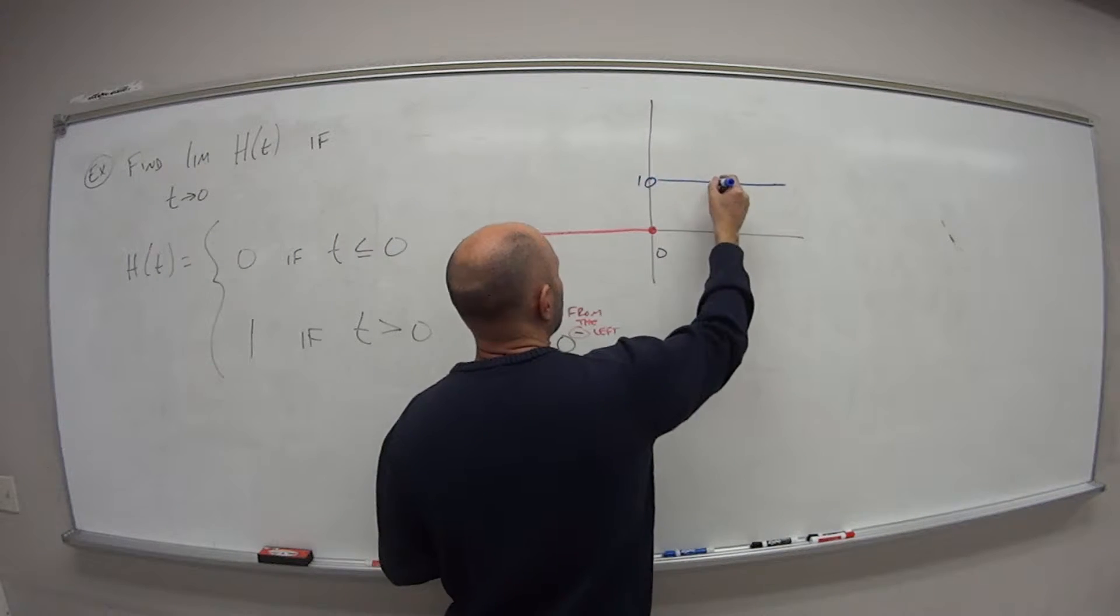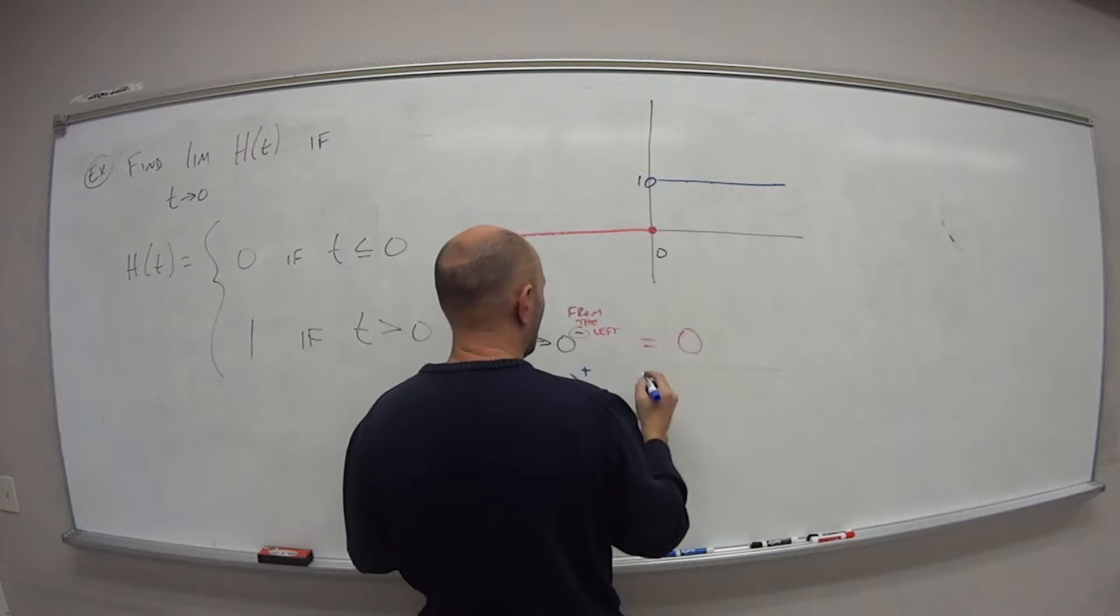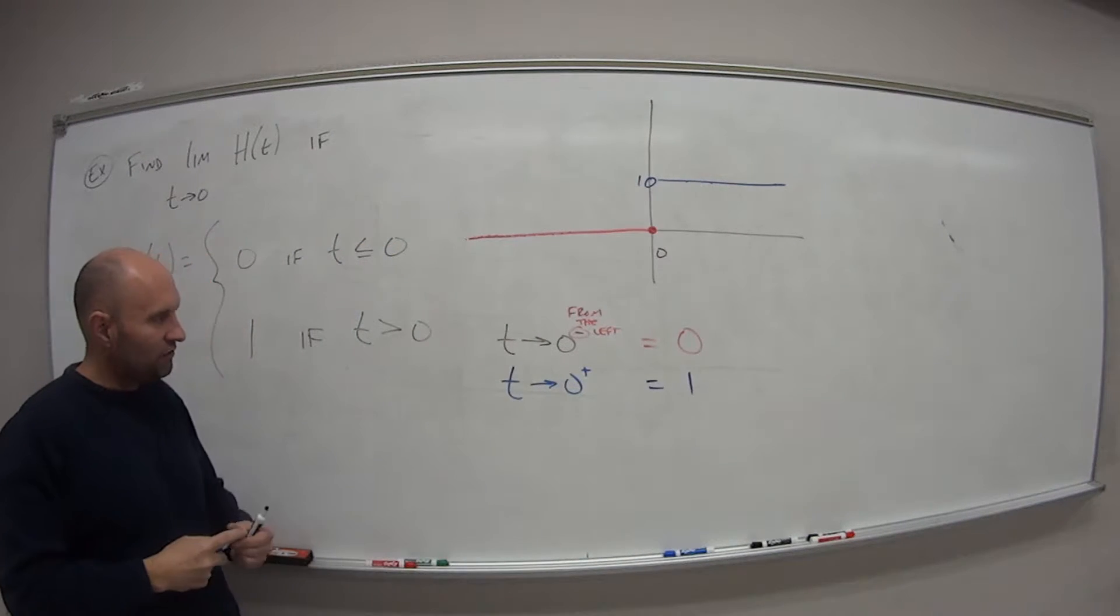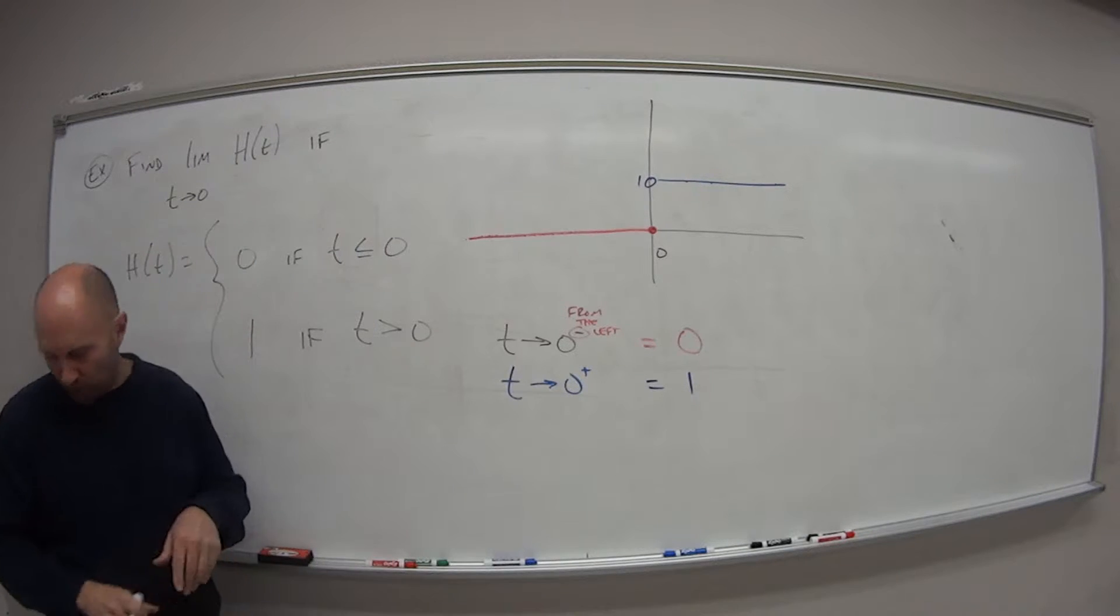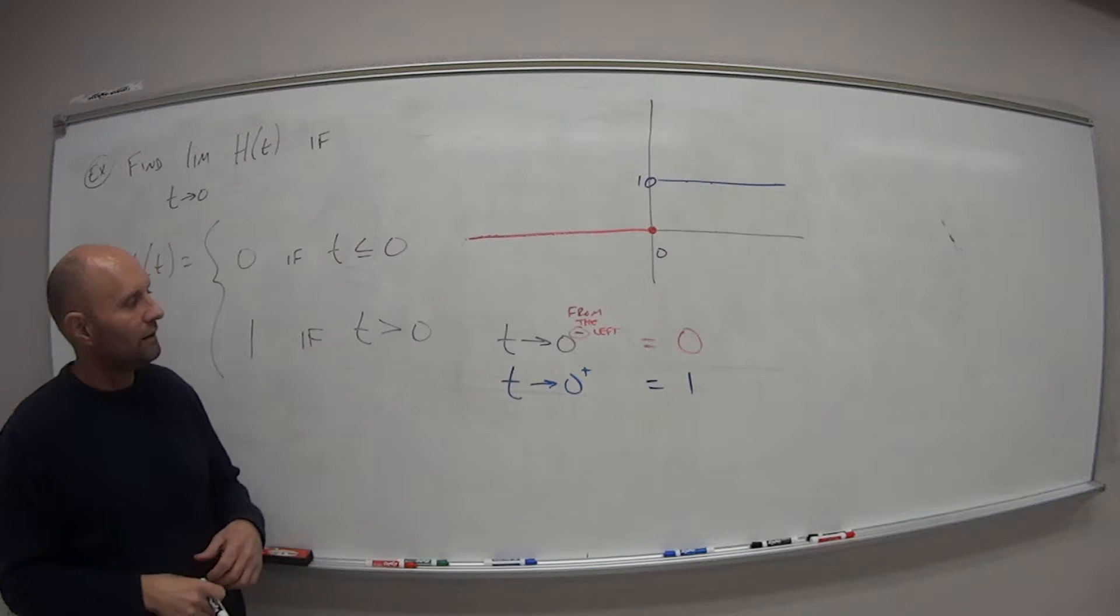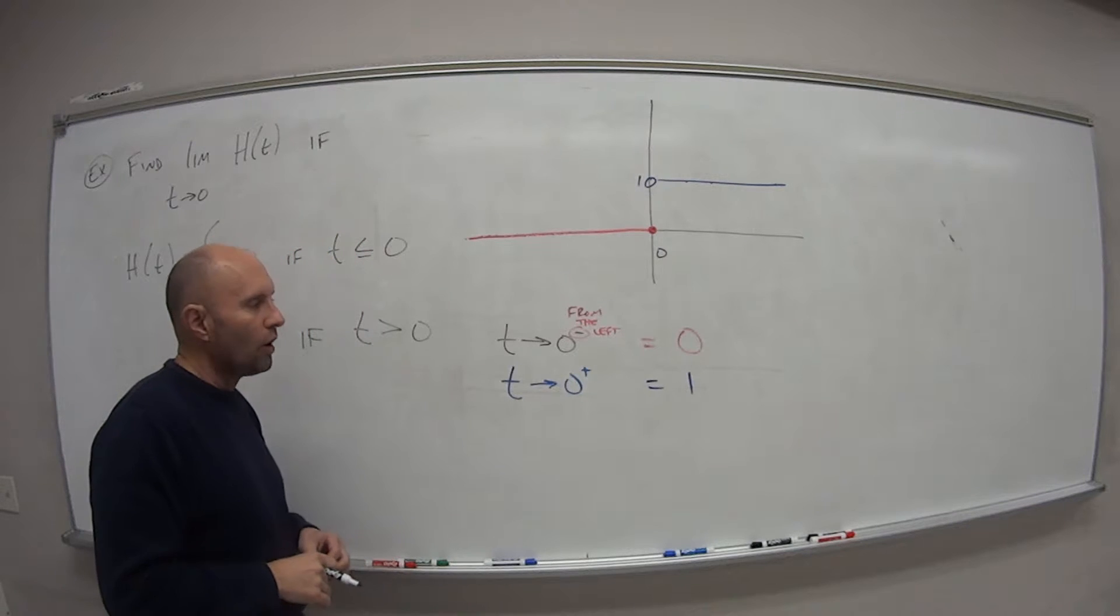So as I'm going over here, what value am I getting close to? 1. How about here? 1. How about here? 1. So as t approaches 0 from the right side, the value of the function is approaching 1.